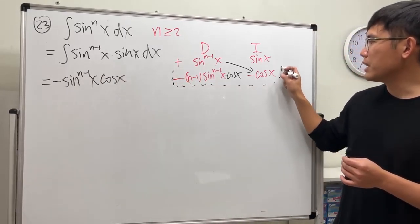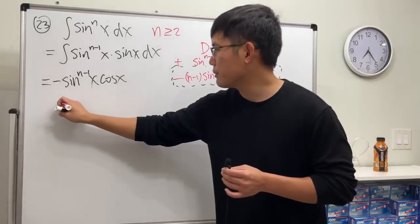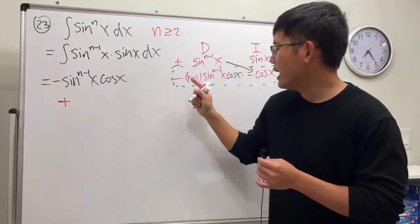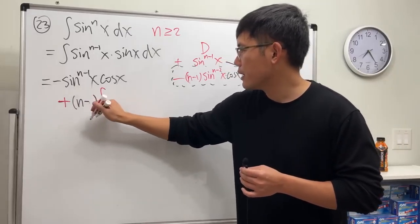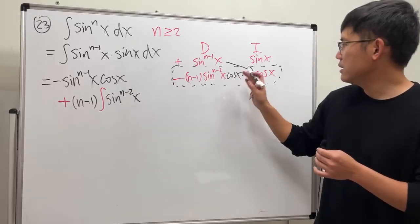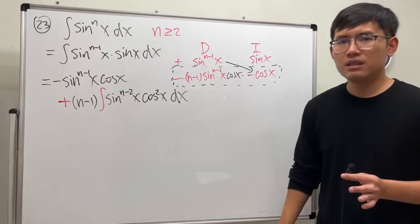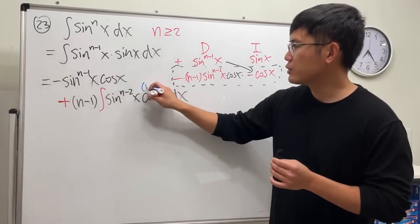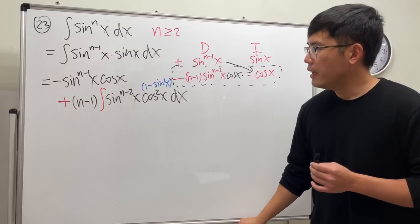Now multiplying these two things together — minus times minus is plus — we get plus n minus one times the integral of sine to the n minus two times cosine squared x. This works out nicely because cosine squared x is just one minus sine squared x, and we can distribute again.